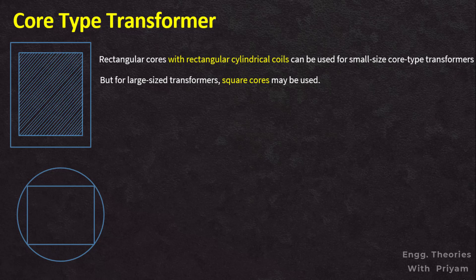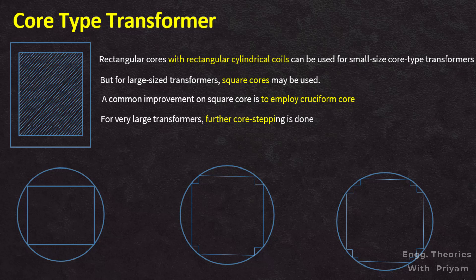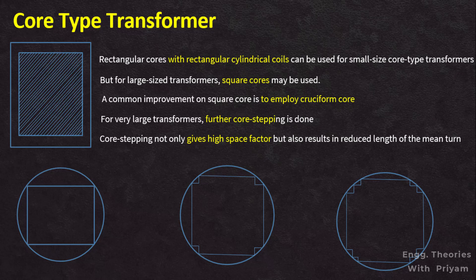For such purposes, square cores may be used, where a circle represents the tubular former carrying the coils. Obviously, a considerable amount of useful space is still wasted. A common improvement on the square core is to employ the cruciform core, which demands at least two sizes of core strips. For large transformers, further core stepping is done, where at least three sizes of core plates are necessary. Core stepping not only gives a high space factor, but also results in reduced length of the mean turn and the consequent I²R loss.